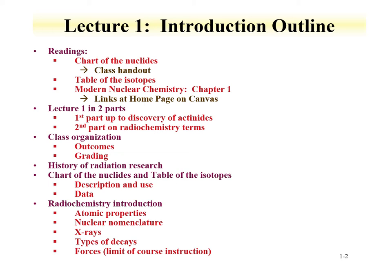Lecture 1 is divided into two parts. The first part goes up to the discovery of the actinides, and the second part focuses on radiochemistry terms. The first part covers the class organization, which will discuss outcomes and grading, and then a history of radiation research. Lecture 2 will cover the chart of the nuclides and table of the isotopes, and an introduction to the terms that are often used in radiochemistry.